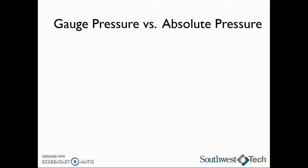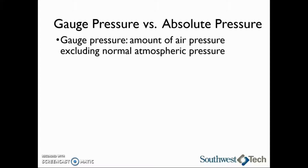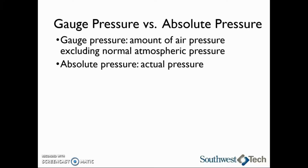When we are talking about air pressure, it is important to note that there is a difference between gauge pressure and absolute pressure. Gauge pressure is the amount of air pressure excluding normal atmospheric pressure. Gauge pressure is what a tire gauge would read. Absolute pressure is the actual pressure, which includes the atmospheric pressure.